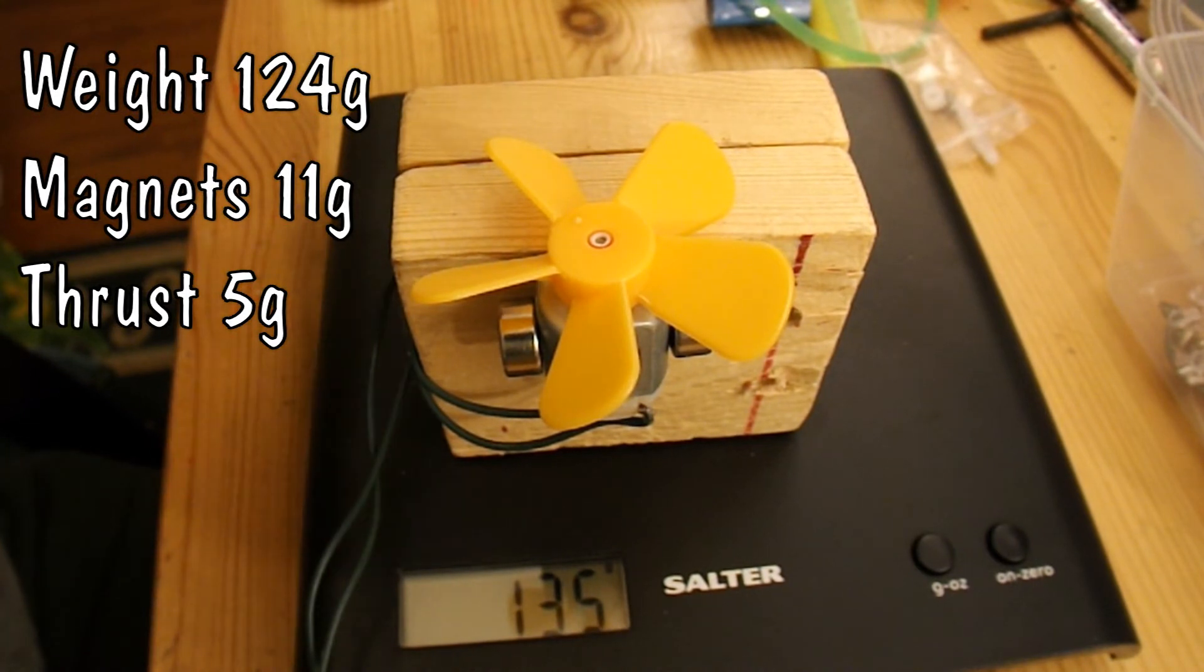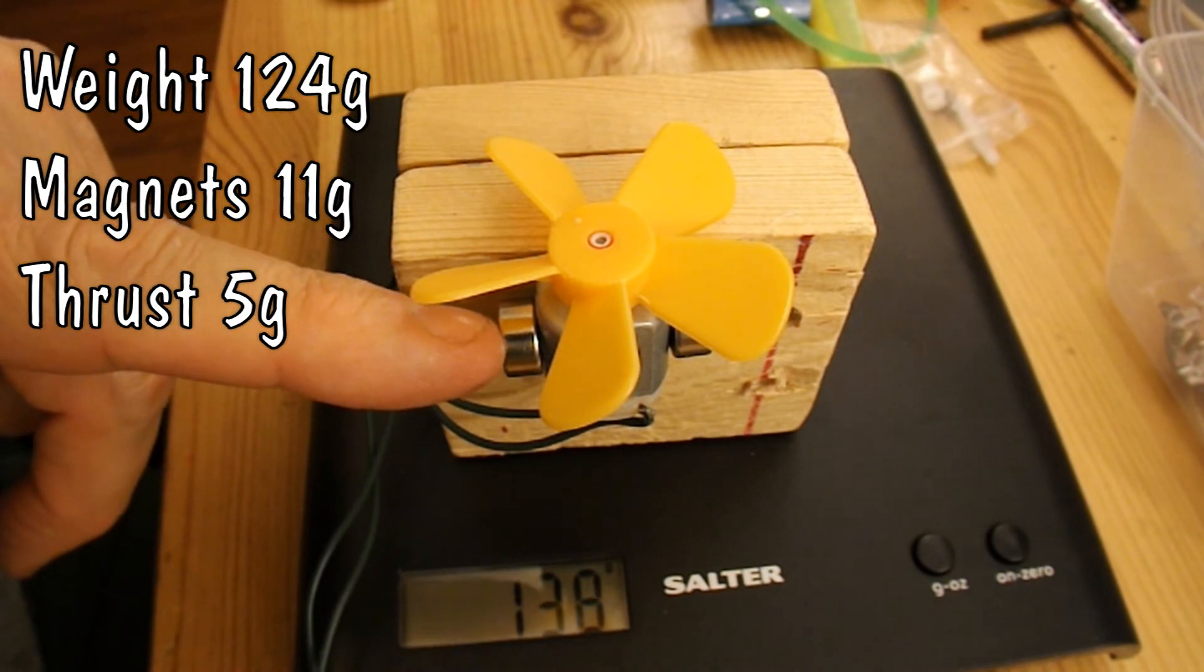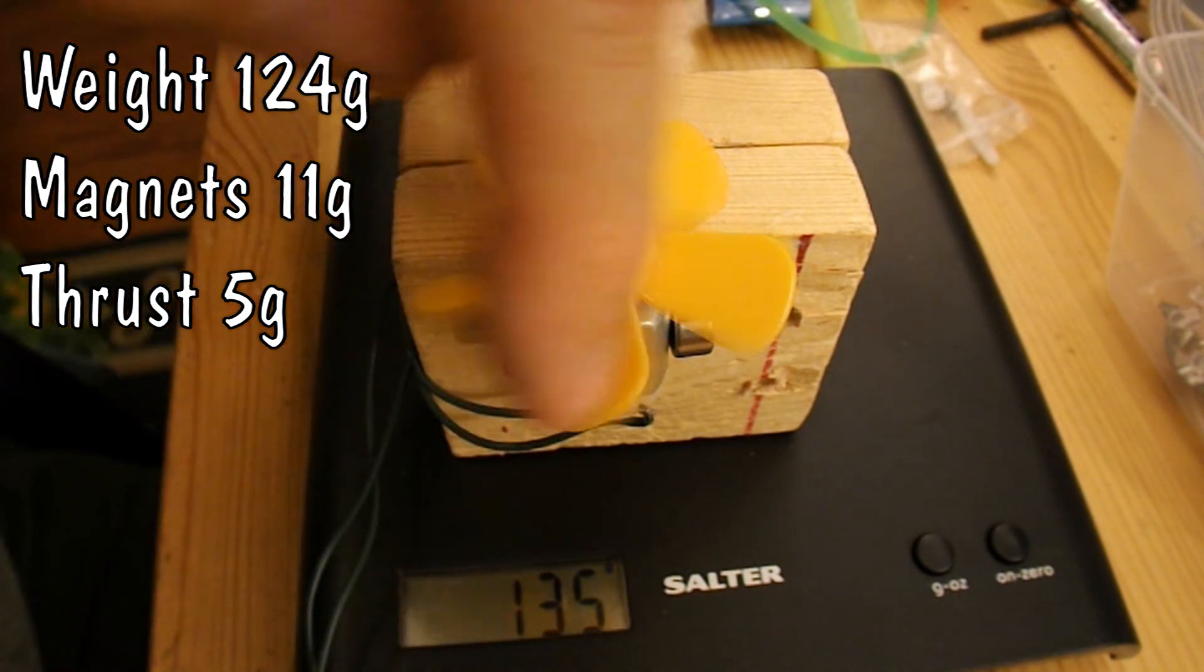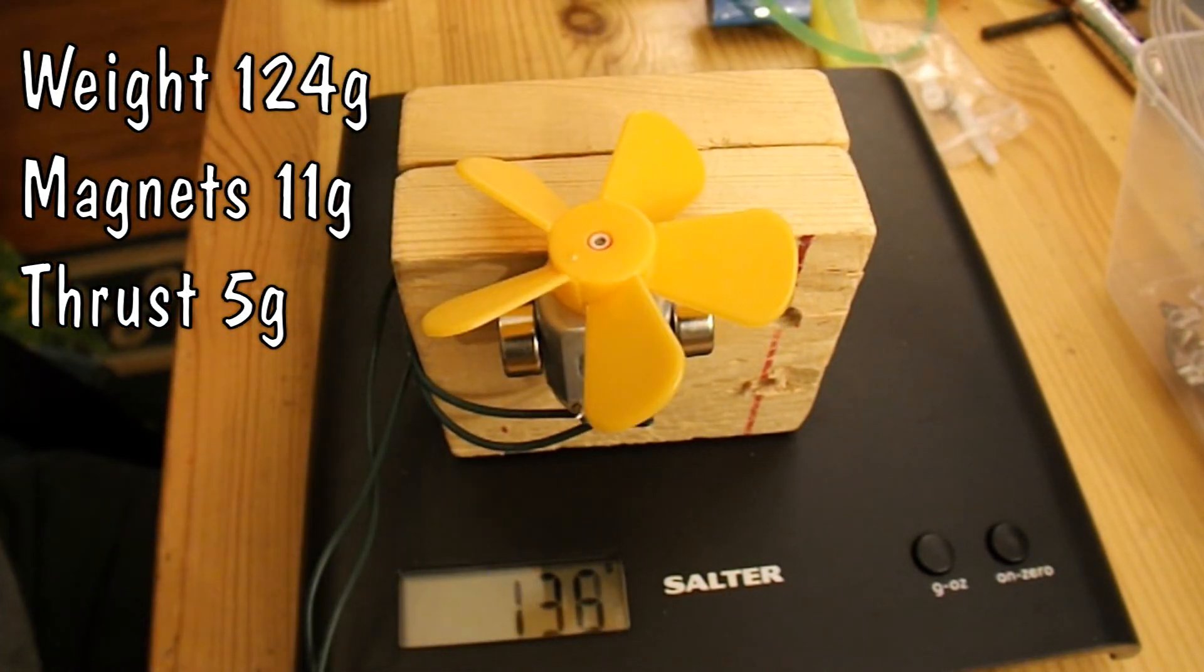So we've added weight significantly, but we have increased the thrust. And those magnets are so powerful they completely override the magnets that are in there. If I put them on the opposite way round, the motor actually turns the opposite way.